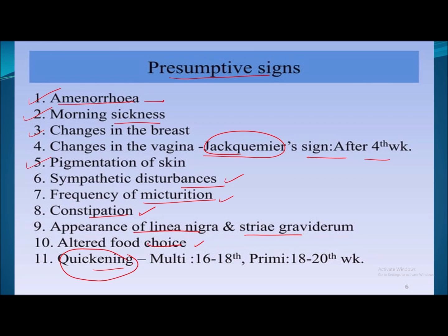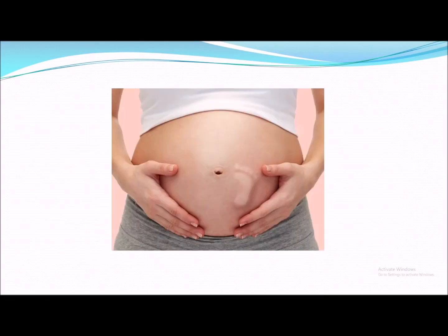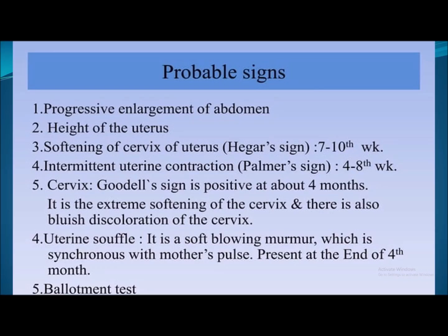Altered food choices are also related to hormonal changes. Quickening — the sensation of fetal movement — can be felt by the mother between 16 to 18 weeks in multigravida and between 18 to 20 weeks in primigravida. This concludes the presumptive signs of pregnancy.